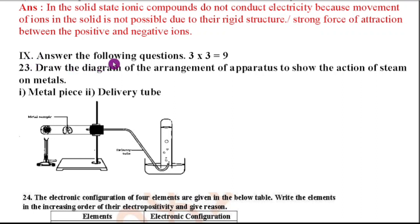Ninth main, answer the following questions 3 into 3 equal to 9 marks. 23rd question. Draw the diagram of the arrangement of apparatus to show the action of steam on metals. So metal piece and delivery tube they are asked to mark. So here this is the figure and I have marked the metallic pieces and delivery tube.